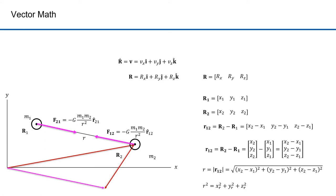The derivative of the position function is velocity, which can be broken down into its x, y, and z, or i, j, and k components, and then expressed as a vector. Here's the double derivative of the position vector function, which equals the single derivative of the velocity vector function, which equals the acceleration vector function — and this is acceleration expressed as a vector.